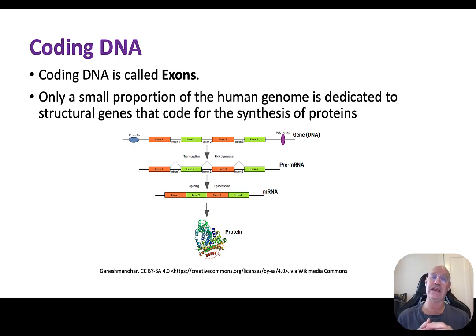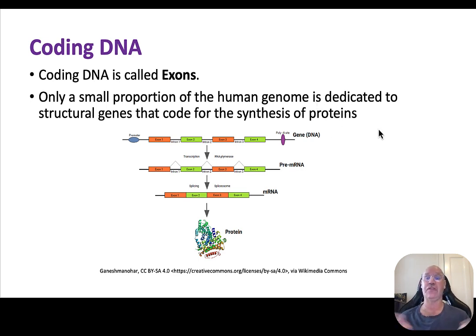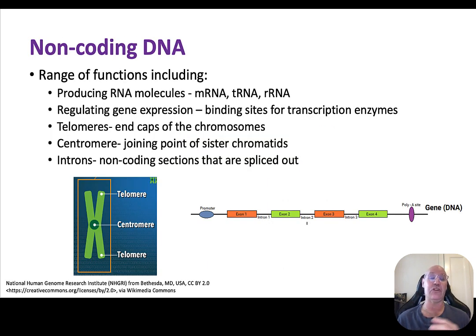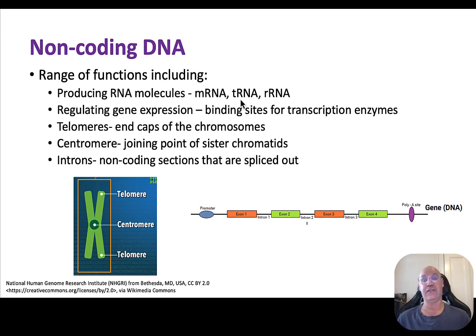We have two different types of DNA: coding DNA and non-coding DNA. Coding DNA is called exons, and it codes for the synthesis of proteins. Not all DNA is coding DNA — much of the genome is actually non-coding. Previously, scientists used to think this was junk DNA because they didn't know what it did, but it actually has a range of different functions. For example, it's involved in the production of mRNA, tRNA, and rRNA — messenger RNA, transfer RNA, and ribosomal RNA, which makes the ribosome. Non-coding DNA is also involved in the important process of gene expression.